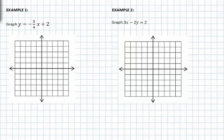Example one asks us to graph y equals negative three-fourths x plus two. Remember we can always start at your y-intercept. This represents b or the y-intercept, where the line crosses the y-axis. So we start right here. That's where this particular line crosses the y-axis.